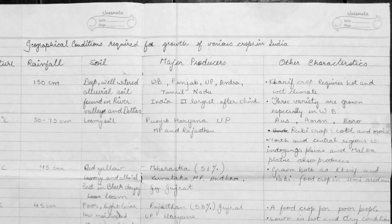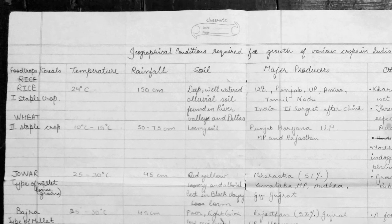There are three varieties of rice grown especially in West Bengal — Os, Aman, and Boro.